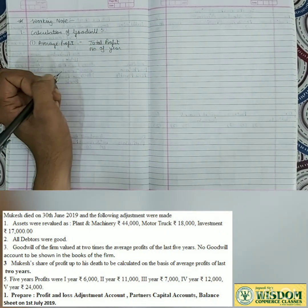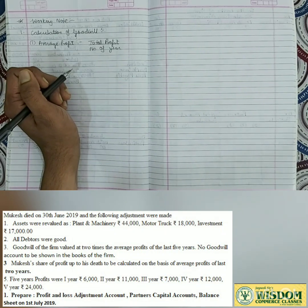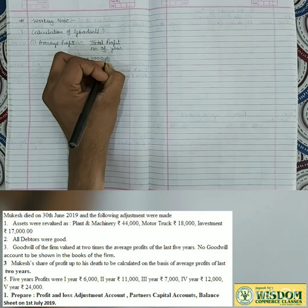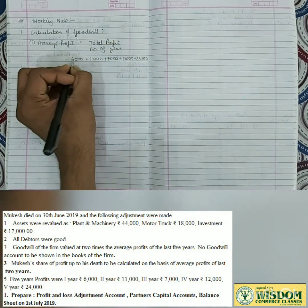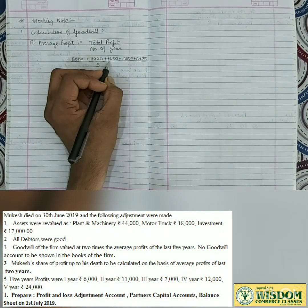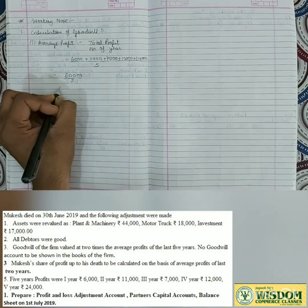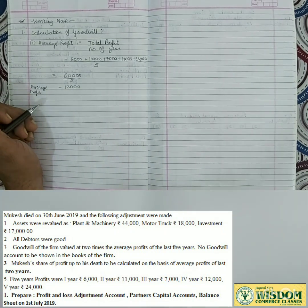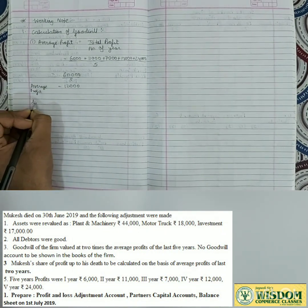We are given the last 5 years' profit in adjustment number 5: 6,000 + 11,000 + 7,000 + 12,000 + 24,000. Total = 60,000. Divided by 5 years = 12,000 rupees average profit. Goodwill = Average Profit × 2 times = 12,000 × 2 = 24,000 rupees. This is the total firm goodwill.